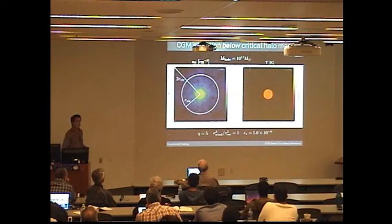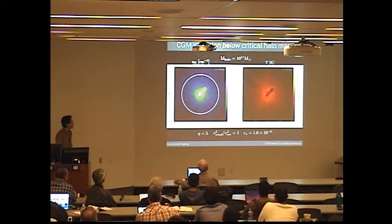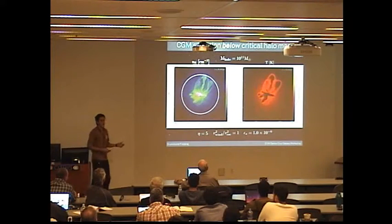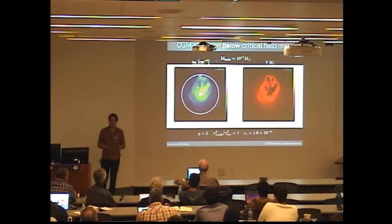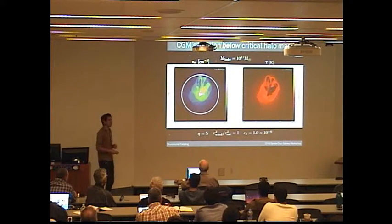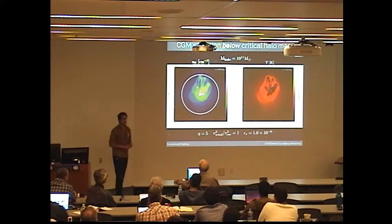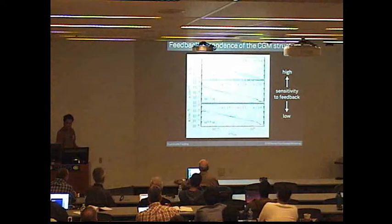But what happens when we push to lower masses? Now we're below this so-called critical halo mass, and we'll see very different behavior. This is a 10 to the 11 solar mass halo. We started out with an initial shock to help it out, but that rapidly cools, and we transition to a very different state where we have inflowing accreted material directly interacting with outflowing wind material, and the CGM is no longer anywhere near hydrostatic equilibrium. It's very turbulent, and the properties of the CGM are really going to be sensitive to the properties of feedback.